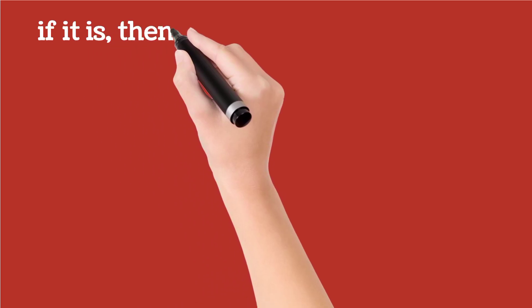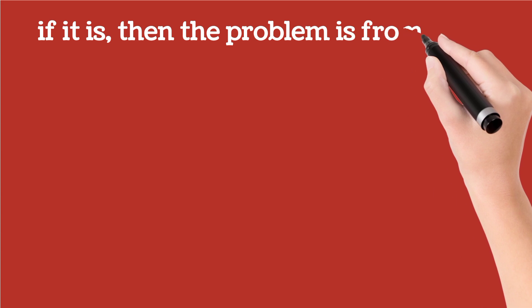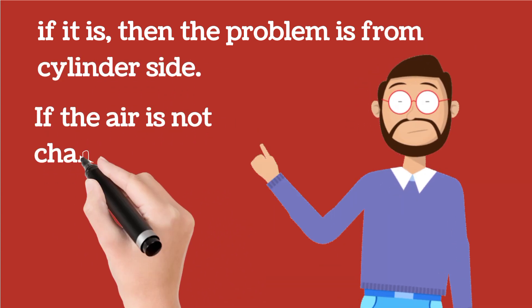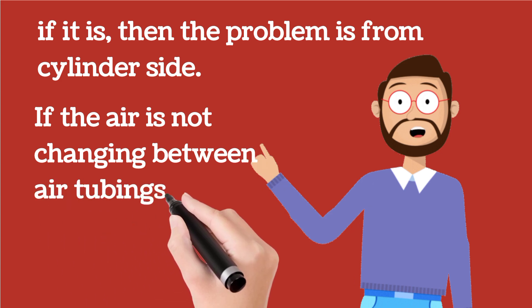If the air is changing between tubes, then the problem is from cylinder side. If the air is not changing between air tubings, then SOV is not working.